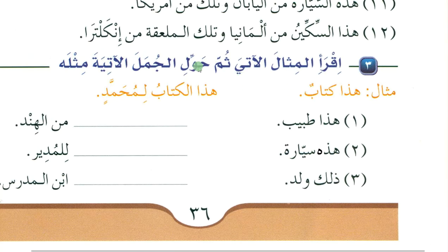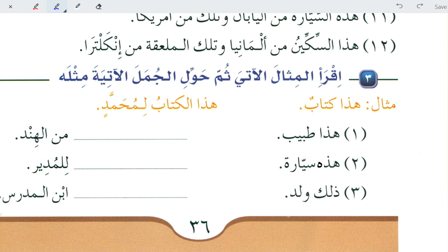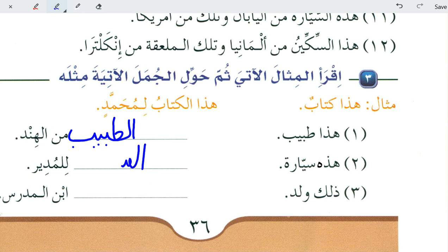Read the following example then convert the following sentences like it. Haza kitabun — 'this is a book', talking about an indefinite thing. But when talking about a specific book: haza al-kitabu li-Muhammad — 'this book belongs to Muhammad'. When we talk about a specific thing, we add al to it. Haza tabib — 'this is a doctor'. Haza at-tabibu minal-Hind — 'this doctor is from India', so here you add alif lam to tabib because we are making it definite. Hazihi sayyaratun — 'this is a car' — you will add alif lam: hazihi as-sayyaratu lil-mudir — 'this car belongs to the director'.